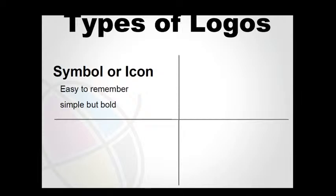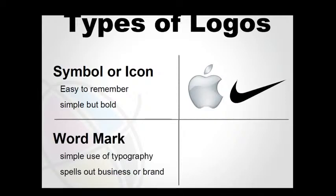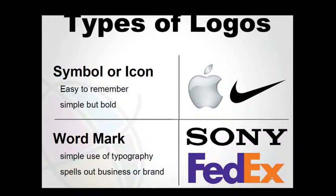Now let's look at types of logos. First, we have a symbol or icon — easy to remember, simple but bold. Apple and Nike logos are symbols or icons. Then we have a wordmark, which is a simple use of typography that spells out a business or brand name — it's readable, like Sony. FedEx is also a wordmark, and if you look closely at FedEx you can see a negative space that creates an arrow.